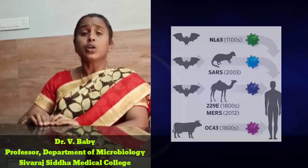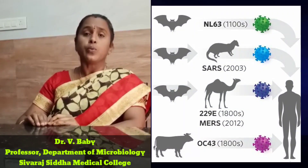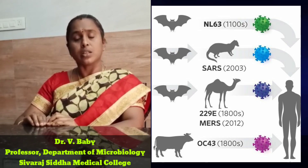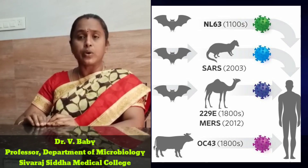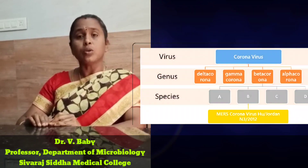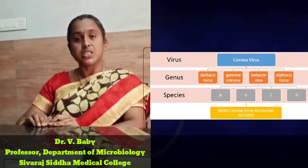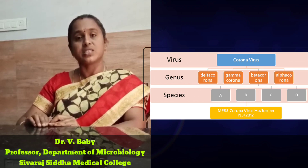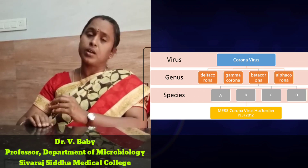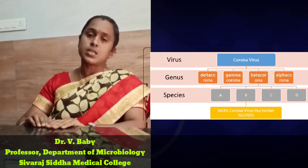Now, when we look at the human coronavirus, there are 4 types: alpha-coronavirus, beta-coronavirus, gamma-coronavirus, and delta-coronavirus. Among these, some types cause more serious infections.